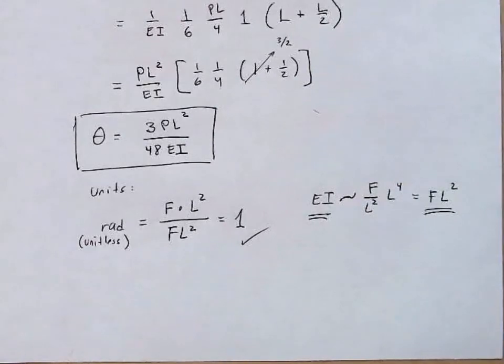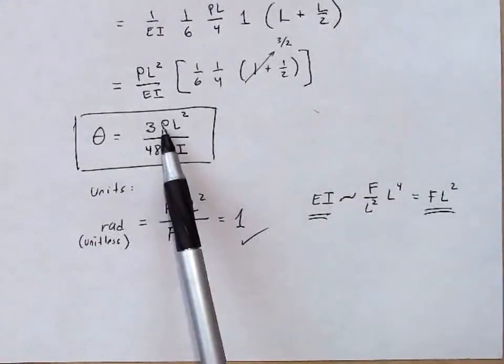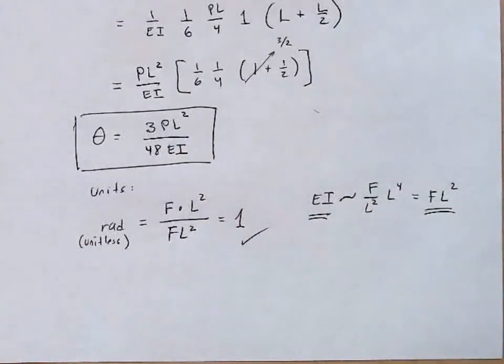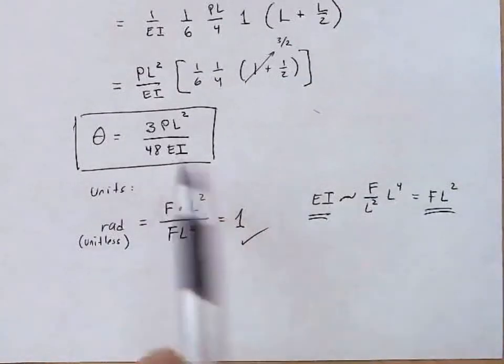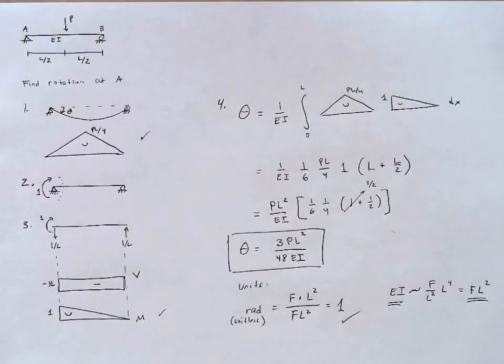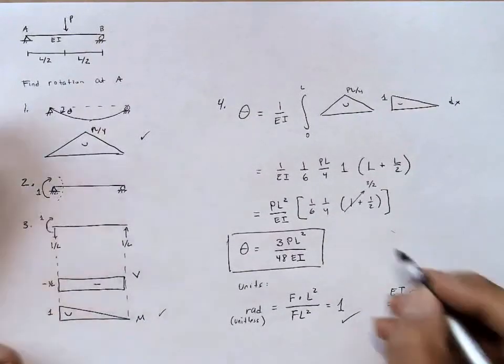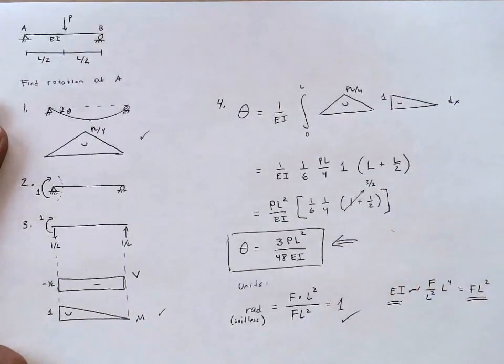Now, if this were an actual problem with numbers, we would now plug in a value for P, say 3 kips, L, maybe 20 feet, E, if it's steel, 29,000 KSI. I could be something like 200 inches to the fourth. And we would just plug in those numbers and plug and chug. But for now, this is our answer right here.